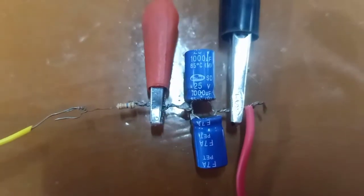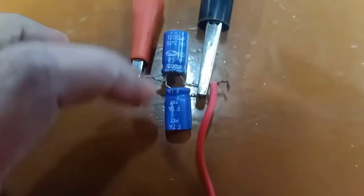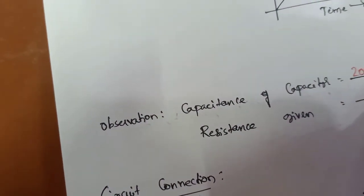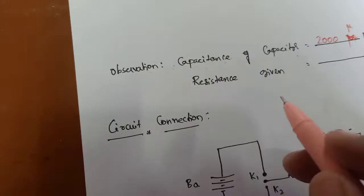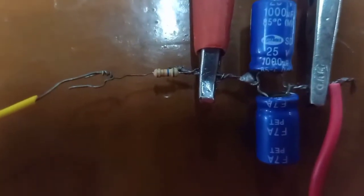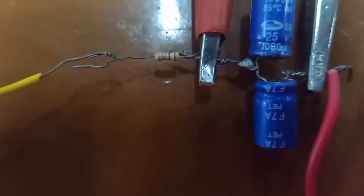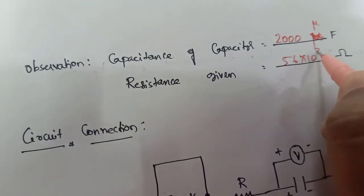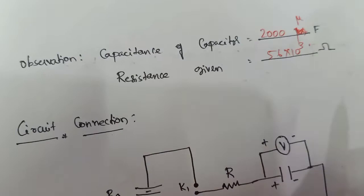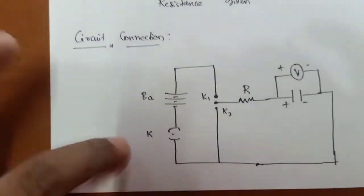The capacitance of each capacitor is 1000 microfarads, and I am using two capacitors, so the total is 2000 microfarads. The resistance, as you can observe, is green-blue-brown-gold, which gives 56 × 10³ ohms, that is 56 kilo ohms.